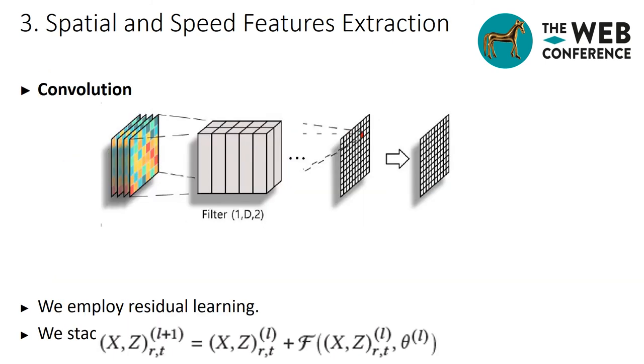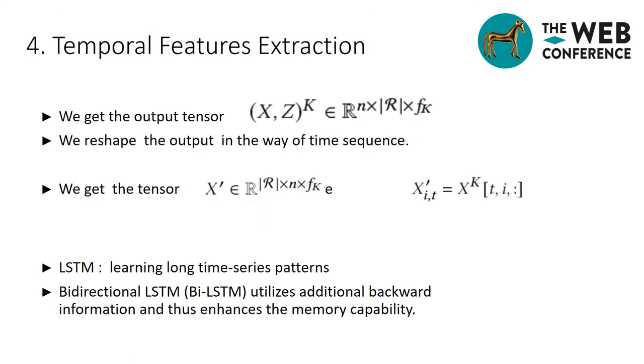Second component of the residual unit, we use a 3D convolution layer to extract the features of spatial matrix. On top of the K residual units, we get the output tensor. We then reshape the output in the way of time sequence to feed into a recurrent neural network and get the tensor X'.